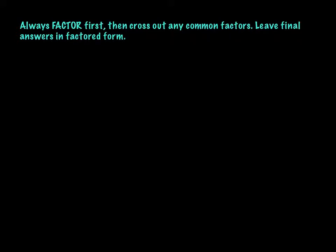The rules for simplifying these problems: always factor first. You have to factor first. Then cross out any common factors. Do not cross out through things — we cannot cross out through addition or subtraction. Leave your final answers in factored form. I don't want to see everything foiled out and multiplied out. That's ugly and not simplified. So let's do some example problems now.